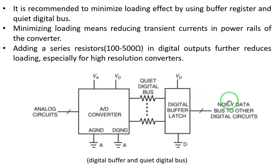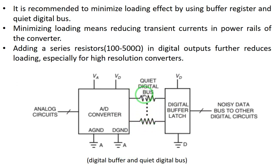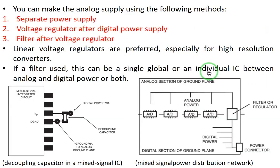It is also recommended to minimize the loading effect by using buffer registers and a quiet digital bus. The quiet digital bus means that on a digital interface — whether a serial or parallel bus — you place resistors with values between 100 and 500 ohms. This will reduce loading especially for high-resolution ADCs, and when you minimize loading it also reduces transient currents in power rails, which is a good thing.